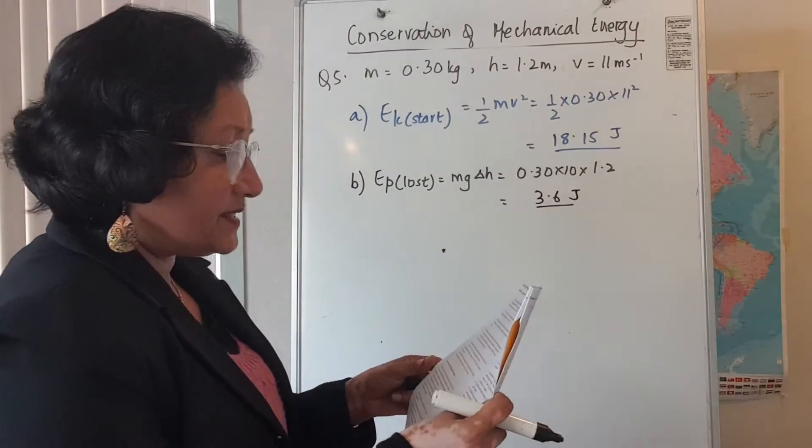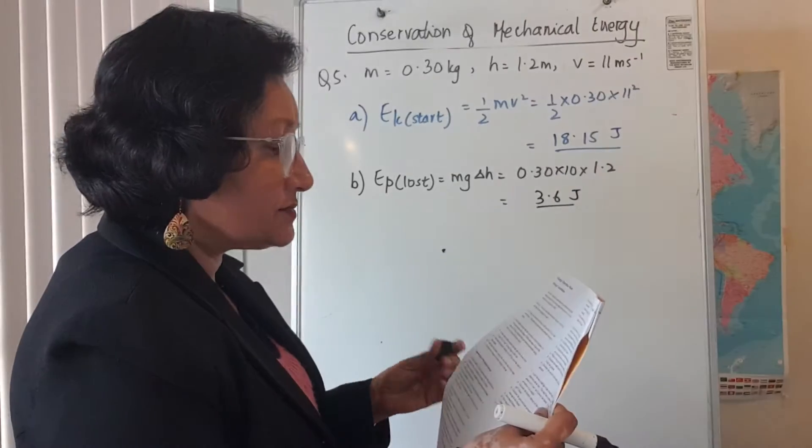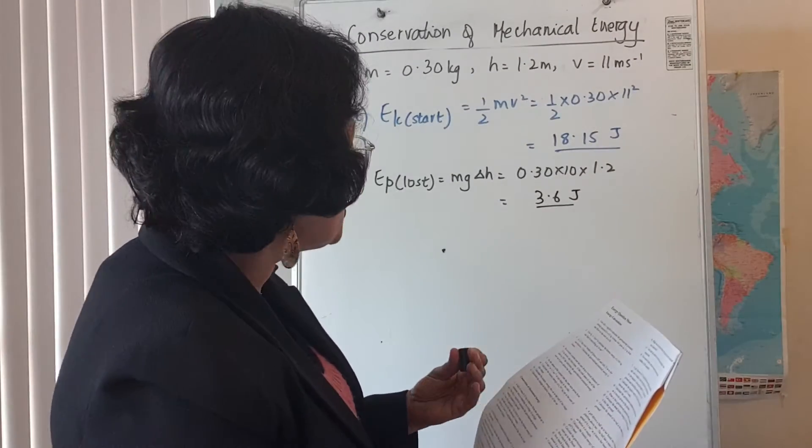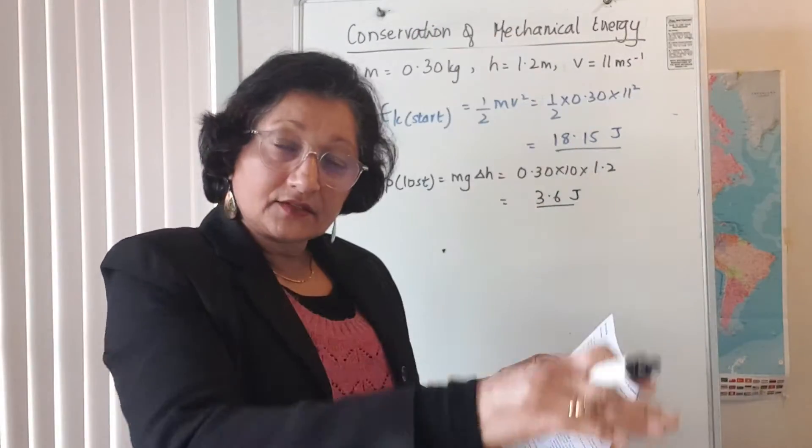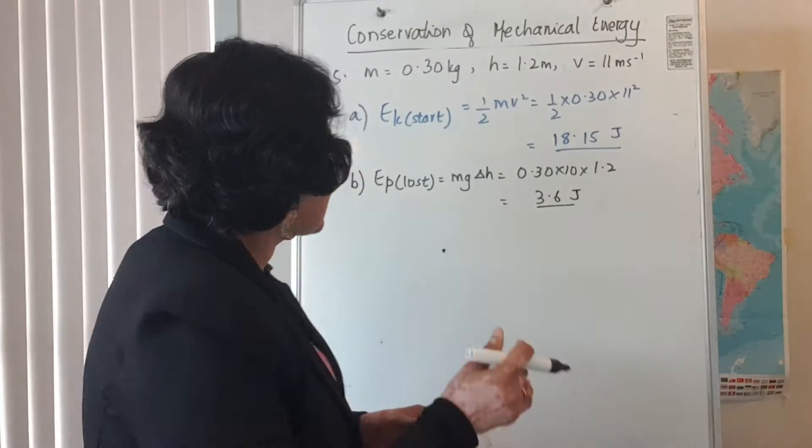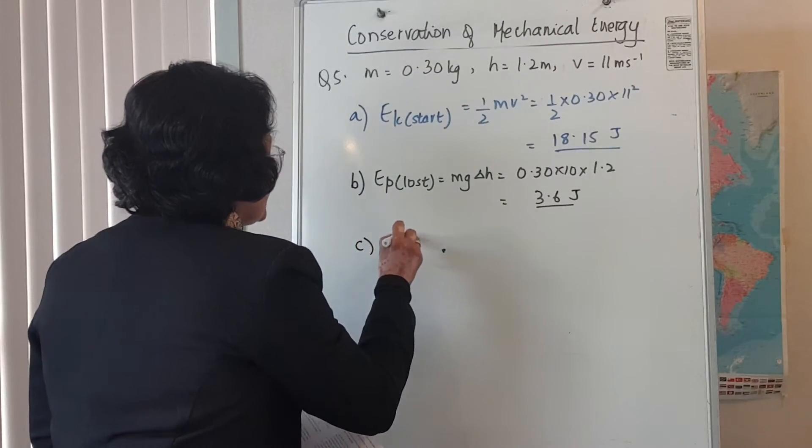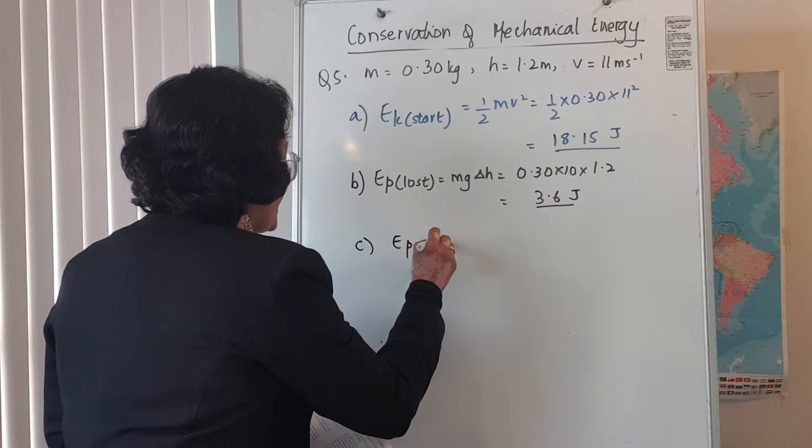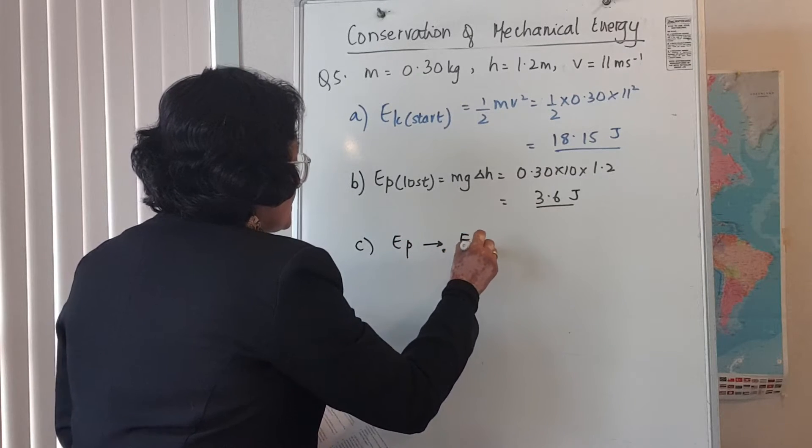What is the gravitational potential energy changed into? As something is falling down, all the gravitational potential energy is changed into kinetic energy. So this gravitational potential energy is going to be changed into kinetic energy. This arrow means it's changed to.